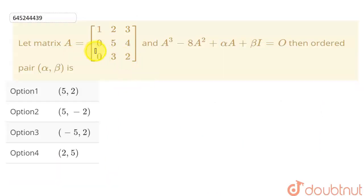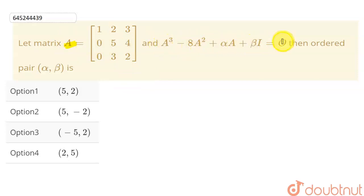In this question we have been given a matrix A, and a relationship A³ minus 8A² plus αA plus βI equal to 0, and we need to find the ordered pair of alpha and beta.